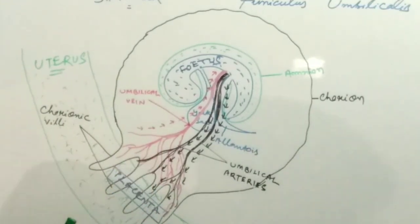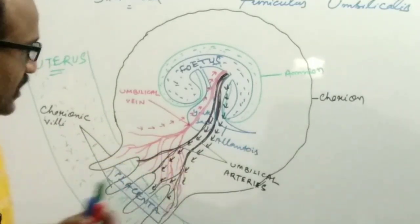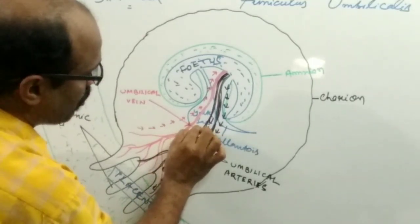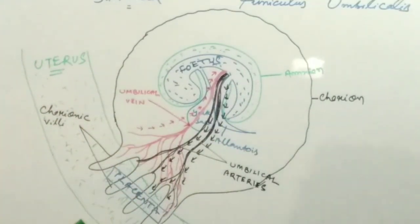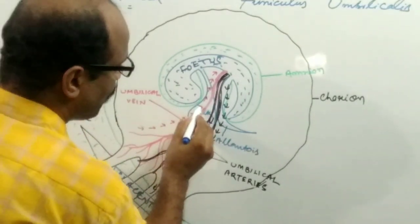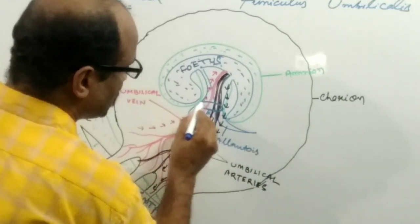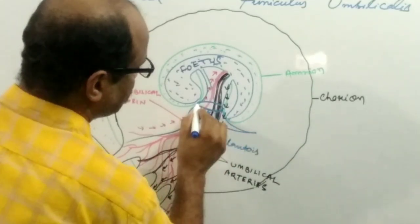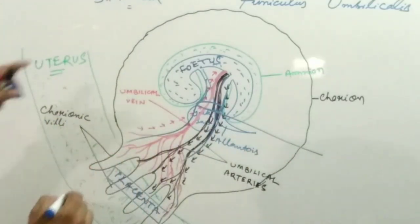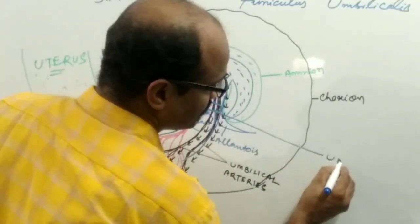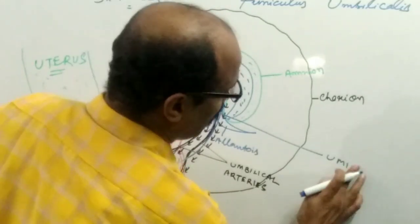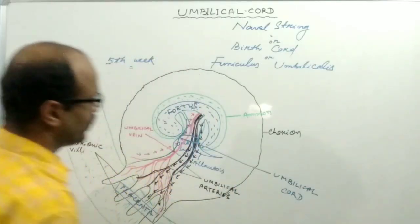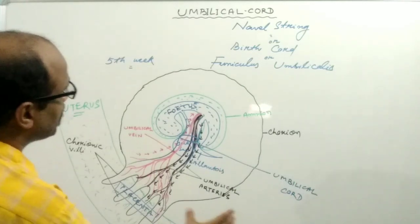So there are three blood vessels in total: one vein and two arteries. Together with the remnant form of the yolk sac and the allantois, these things together form a cord-like structure. Such a cord-like structure is known as the umbilical cord.